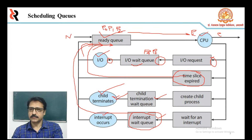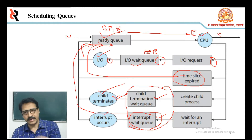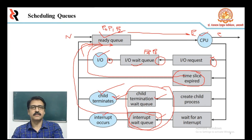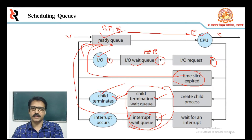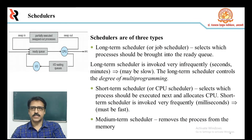In the first two cases — IO request and creating a child process — the process eventually switches from the waiting state to the ready state and is put back into the ready queue. A process continues this cycle until it terminates normally, at which point it is removed from all queues and has its PCB and resources deallocated.